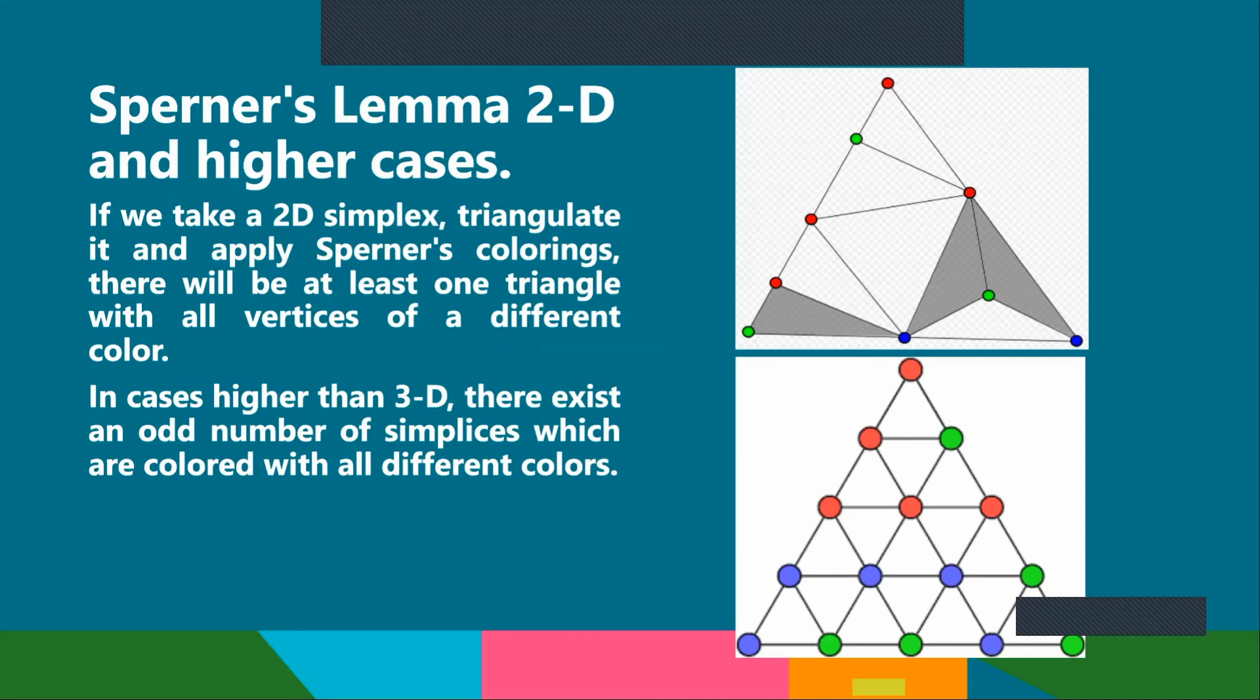In 2D and higher cases, if you take a 2D simplex triangulated and apply Sperner's colorings, then within the bigger triangle there will be at least one triangle in which all vertices will have different colors. In the higher cases above 3D, like 4D, 5D, as many and however many you want, basically there will be a simplex after triangulation which will contain all edges of different colors.